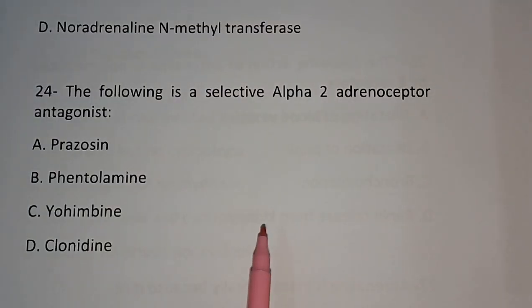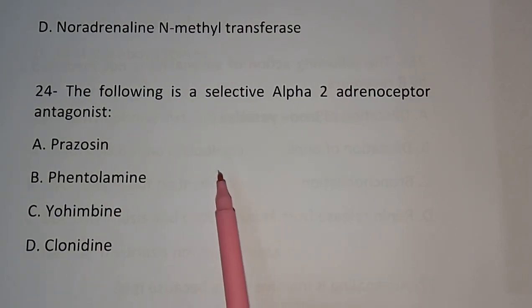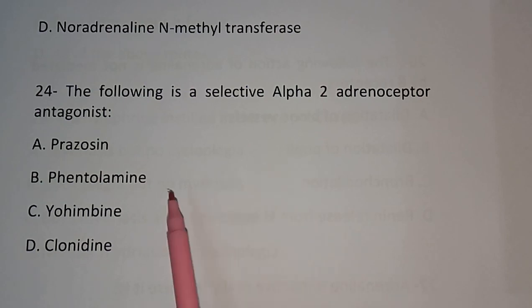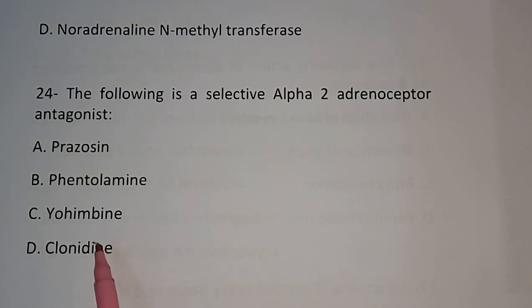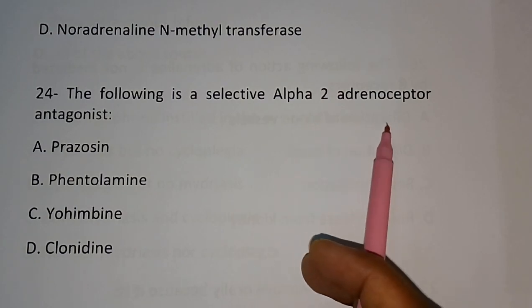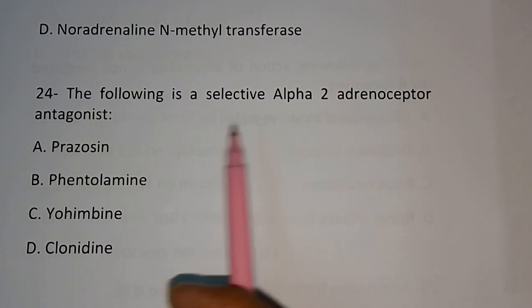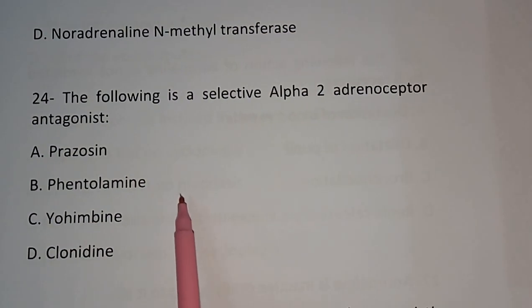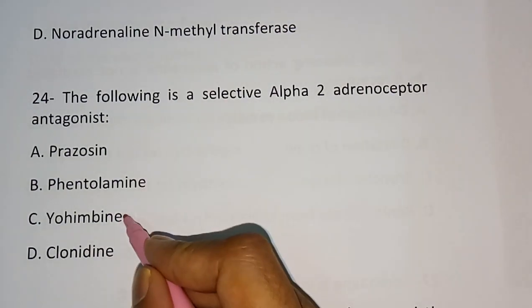Question number 24: The following is a selective alpha-2 adrenergic receptor antagonist — Prazosin, Phentolamine, Yohimbine, Clonidine. The question asks for the selective alpha-2 blocker. The correct answer is: Yohimbine.